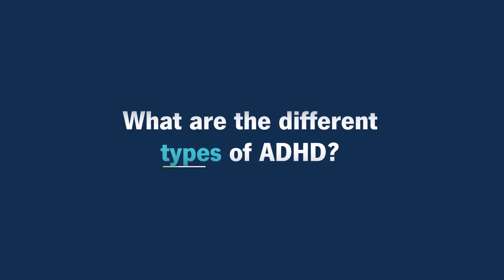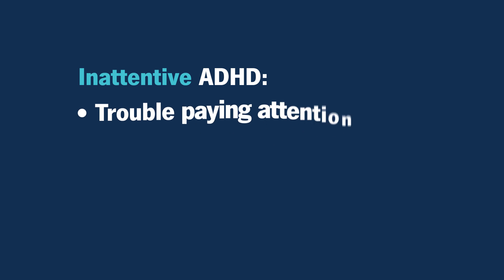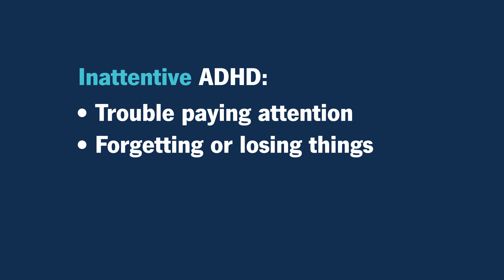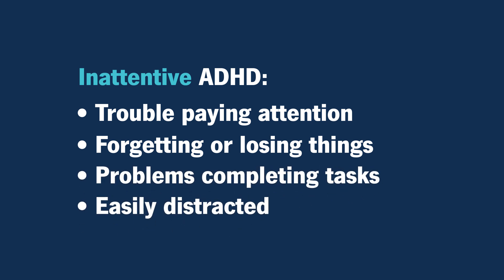What are the different types of ADHD? There are three types of ADHD. The first type is inattentive subtype. This type is where the individual has trouble with basically paying attention. They might forget things, lose things, have trouble completing tasks because they're not paying attention, or be easily distracted.